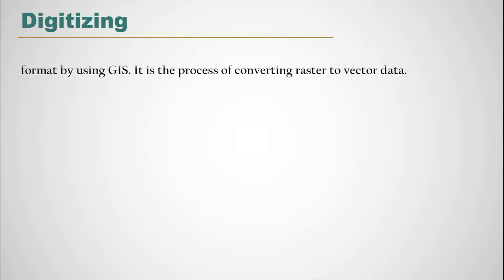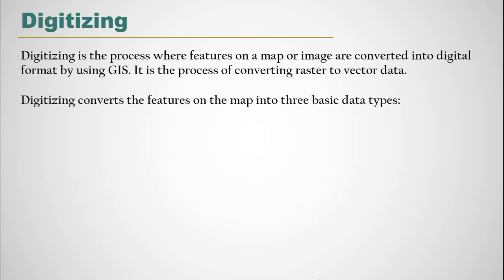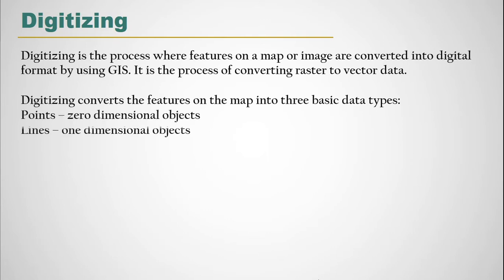What is digitizing? Digitizing is the process where features on a map or image are converted into digital format by using GIS. It is the process of converting raster to vector data. Digitizing converts the features on the map into three basic data types: point, line, and polygon.